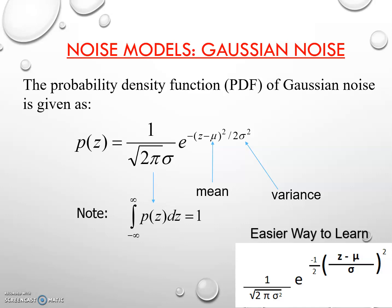After the uniform noise model, we have this model called Gaussian noise. The probability density function of this Gaussian noise is given as P(z) = 1 divided by under root of 2π times σ, multiplied by e to the power minus (z minus μ) squared divided by 2σ squared. Here, μ is the mean and σ squared is the variance.